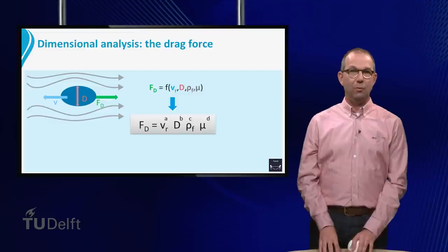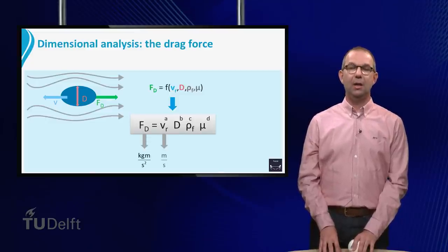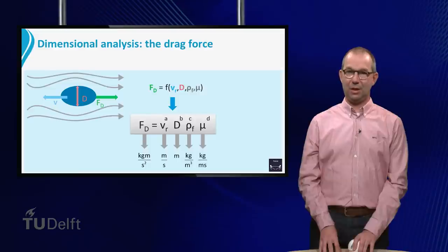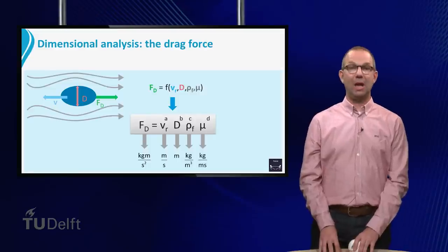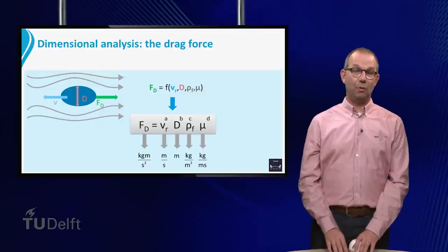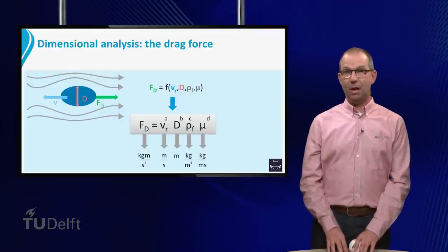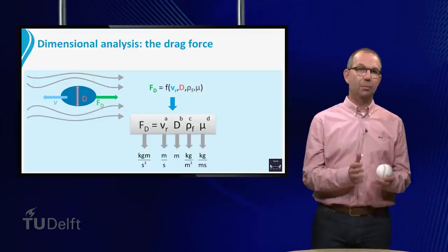In the next step, we write for each parameter its SI units down. For the force, that is kilogram meters per second squared. For velocity, meter per second. For the diameter, meter. For the density, kilogram per meter cubed. And finally, for the viscosity, kilogram per meter per second.